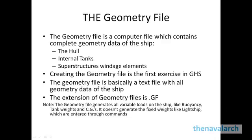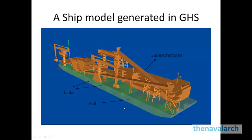Now we take a look at a model generated by GHS. This is a ship model generated using a 3D geometry file. The first part is the outer hull — the outer shell of the vessel. Next are the tanks, visible through the transparent model, and the third part is the superstructures, which have also been modeled.